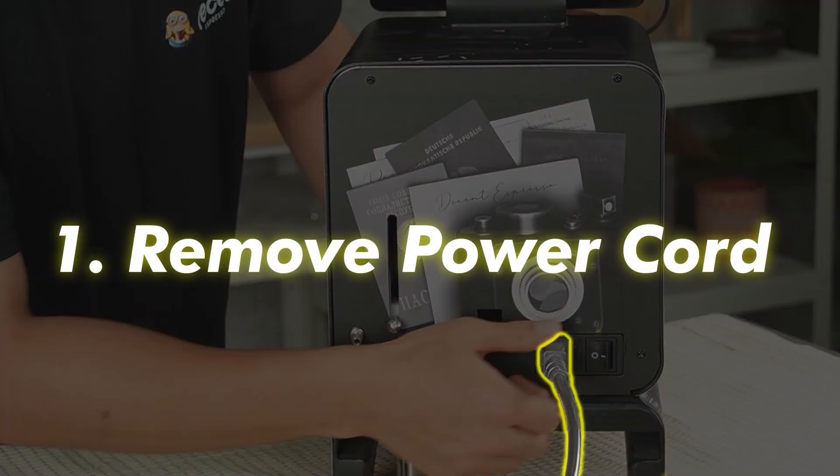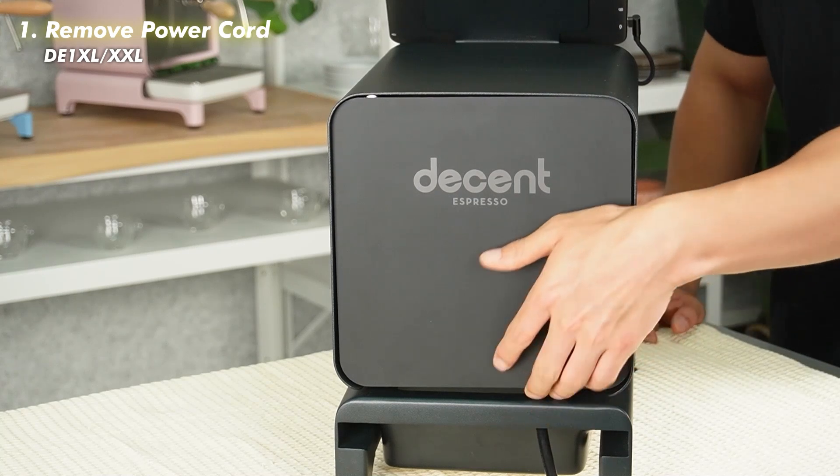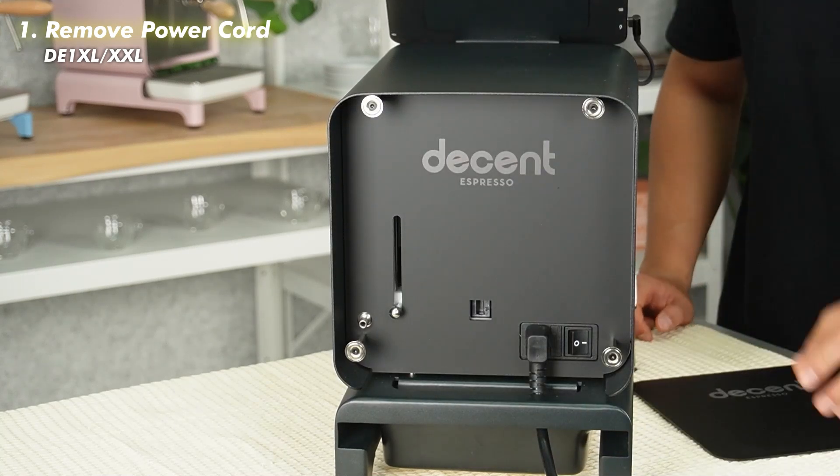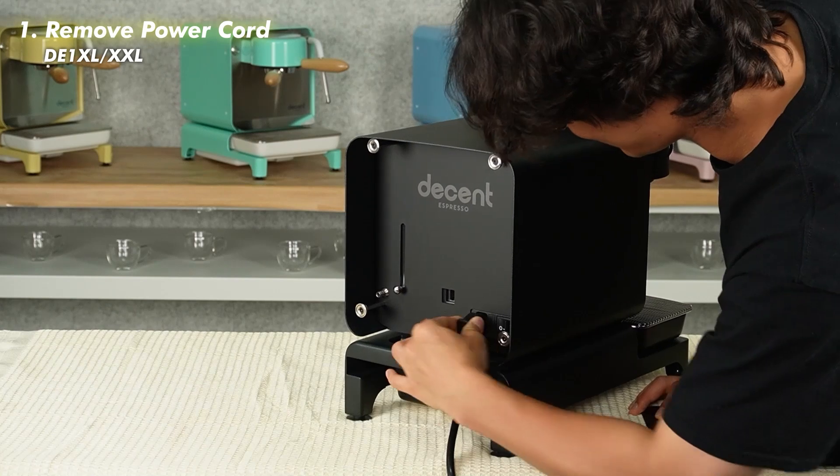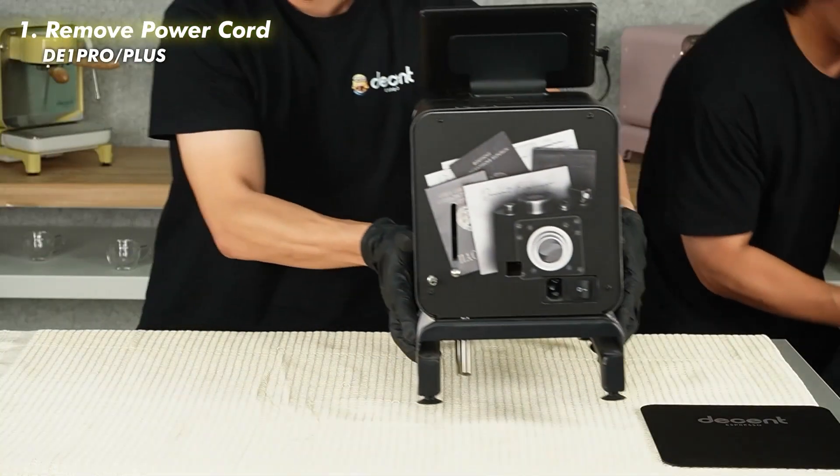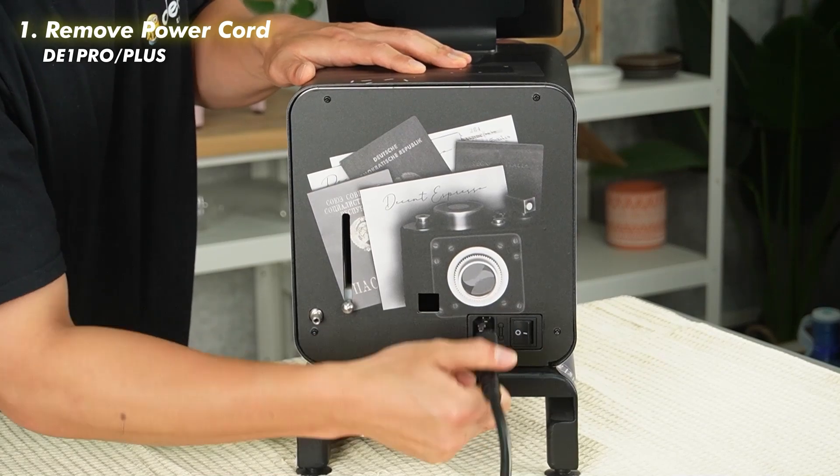First we need to remove the power cord from the machine. For XL or XXL models, first remove the back panel and turn the machine's back switch off and then unplug the power cord. For Pro and Plus models, turn the machine's back switch off and unplug the power cord.